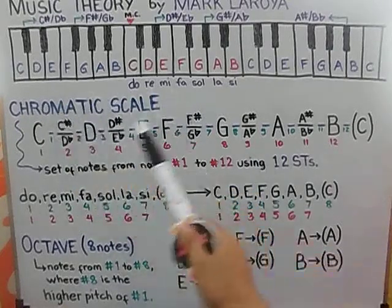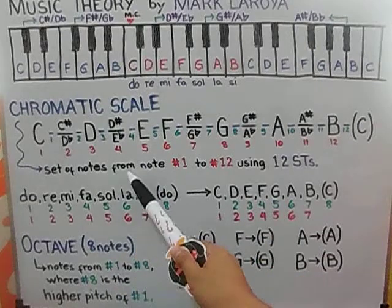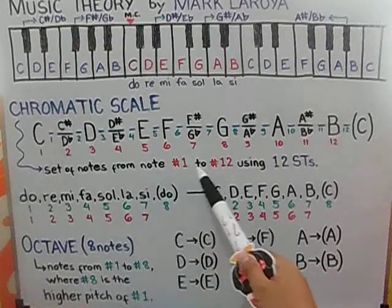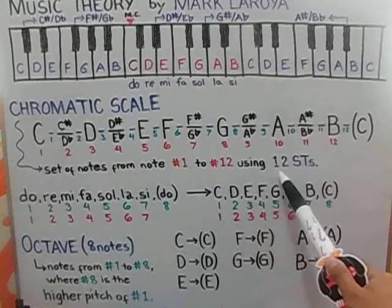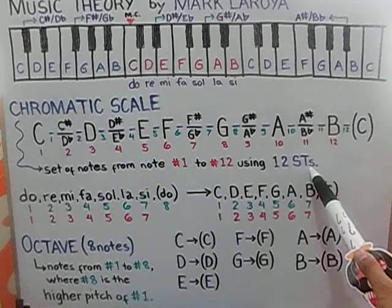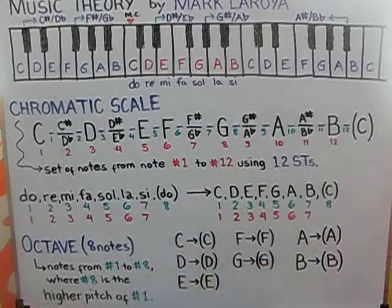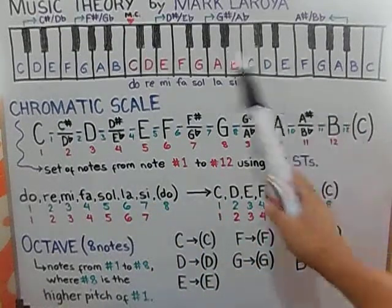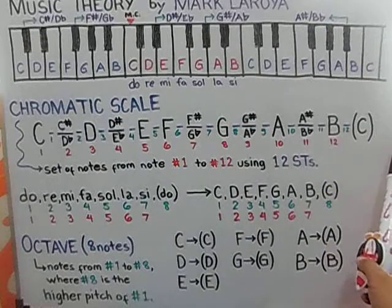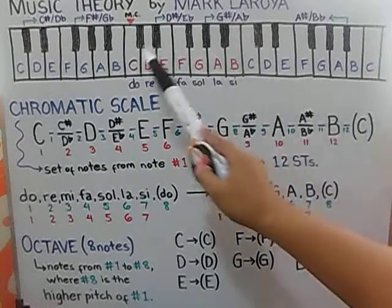Chromatic scale is a set of notes from note number 1 to number 12 using 12 semitones. Okay, to elaborate that, let's use, let's start, let's do this using the key of C.